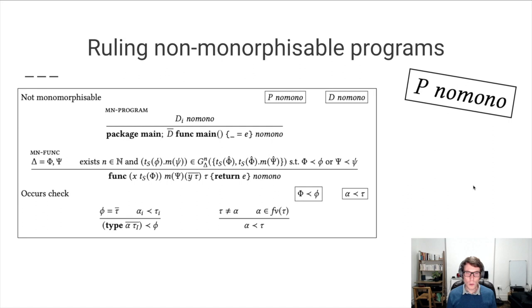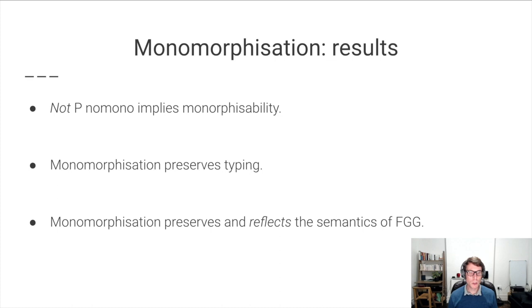To address this problem, we defined the no mono predicate. The idea is that if no mono does not hold, then we can monomorphize that program. For instance, the box program earlier, no mono holds, and we cannot monomorphize this program. In the paper, we show that if no mono doesn't hold for a program, then it is monomorphizable. We also show that monomorphization preserves typing, and that it preserves and reflects the semantics of FGG. For the reflection direction of this result, there is a subtlety due to the structural subtyping of Go, which Ray will explain with our tool in the next part of this talk.